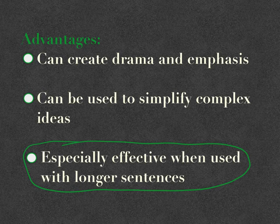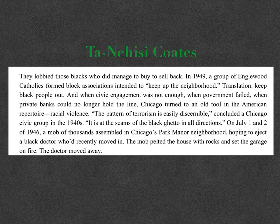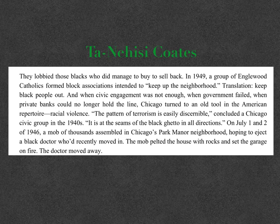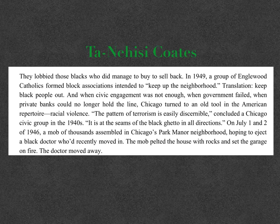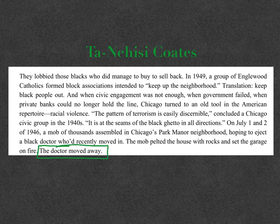Here's an example from the great Ta-Nehisi Coates. This is the end of a paragraph from his essay 'The Case for Reparations.' It reads: 'They lobbied those blacks who did manage to buy, to sell. Back in 1949, a group of Englewood Catholics formed block associations intended to keep up the neighborhood — translation: keep black people out. And when civic engagement was not enough, when government failed, when private banks could no longer hold the line, Chicago turned to an old tool in the American repertoire: racial violence. The pattern of terrorism is easily discernible, concluded a Chicago civic group in the 1940s — it is at the seams of all the black ghetto in all directions. On July 1 and 2 of 1946, a mob of thousands assembled in Chicago's Park Manor neighborhood, hoping to eject a black doctor who'd recently moved in. The mob pelted the house with rocks and set the garage on fire. The doctor moved away.'